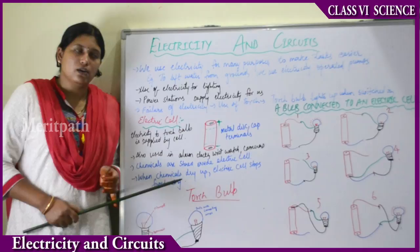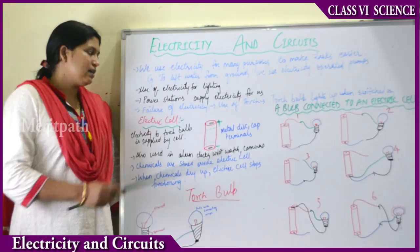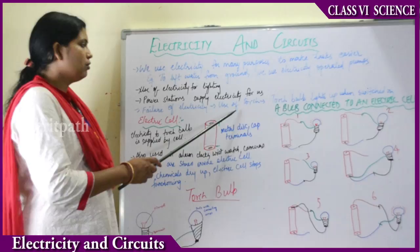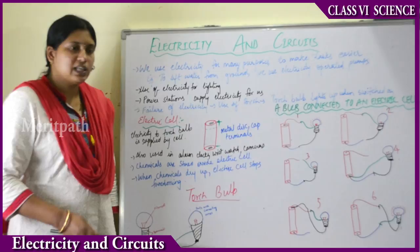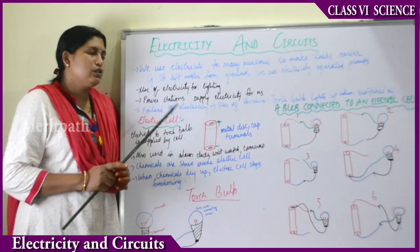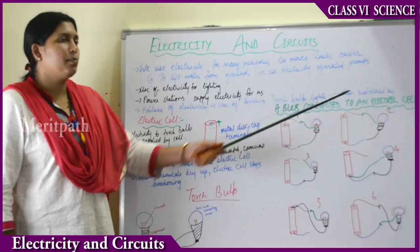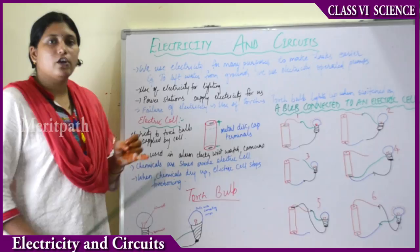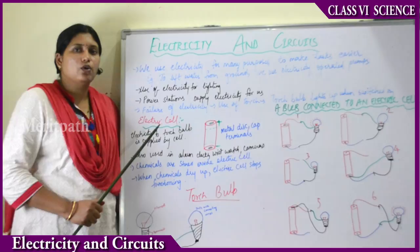Sometimes when there is an unscheduled power cut, it becomes dark in the evenings. At those instances, we use a torch or candles. Electricity is supplied by thermal power stations. When there is a failure of electricity, a torch is useful — when we switch it on, the torch bulb lights up and gives us the light source.